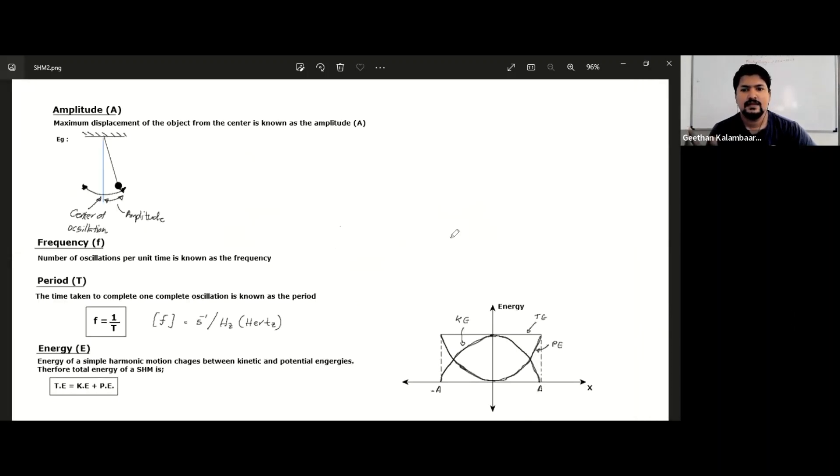It's in the second slide. So the energy of simple harmonic motion - you have total energy, it's a constant. Potential energy and kinetic energy change with the displacement. Where the displacement is zero is the center of oscillation. At the center of oscillation, displacement is zero.